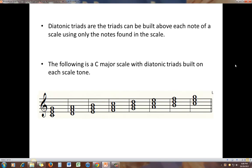Diatonic triads are the chords which can be built above each note of a scale by using only the notes which are found in the scale. So in this example we have a C major scale and above each scale tone there's a triad built.